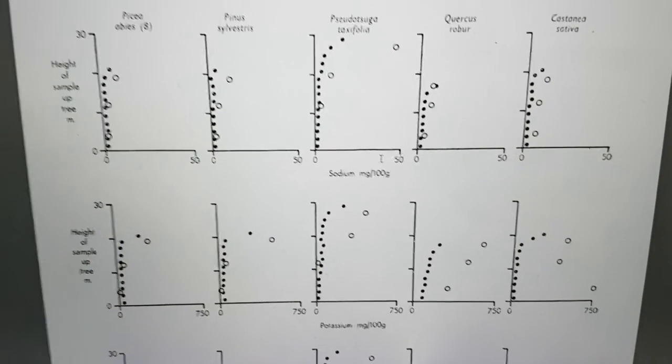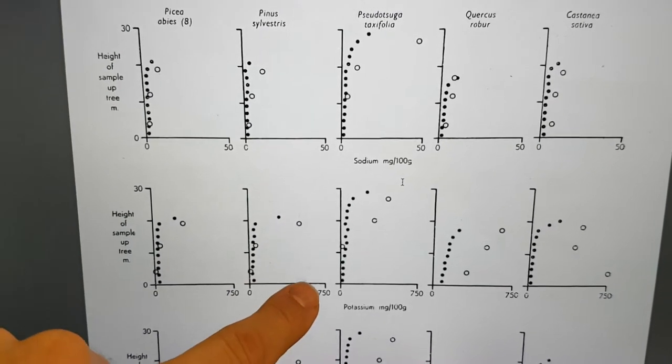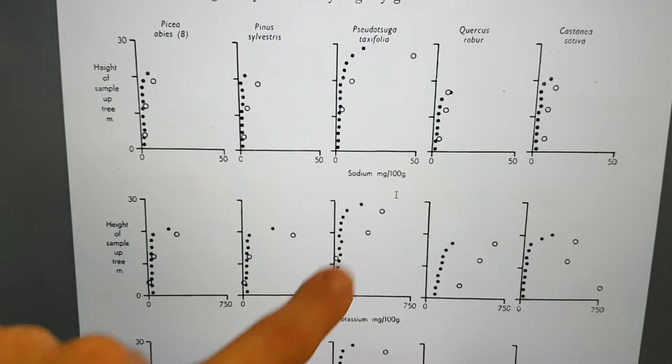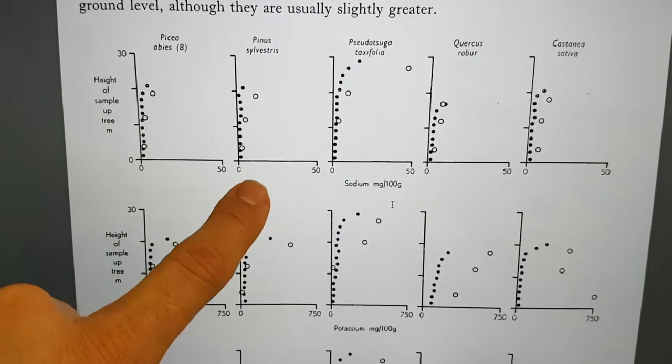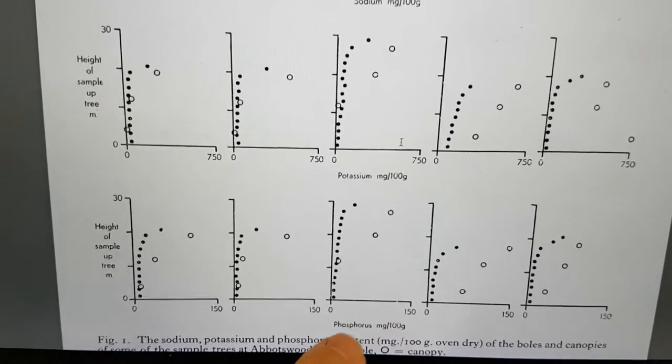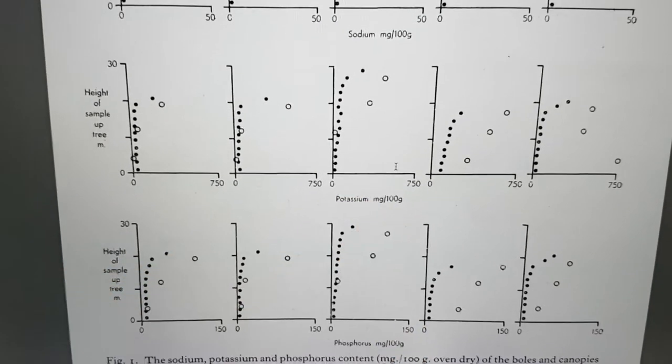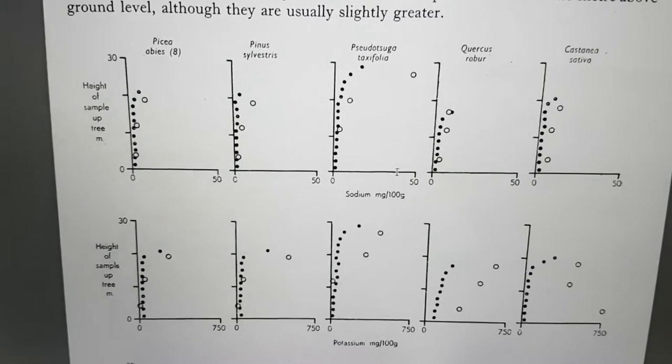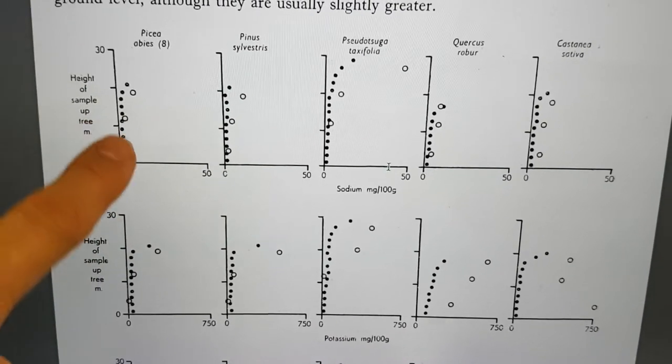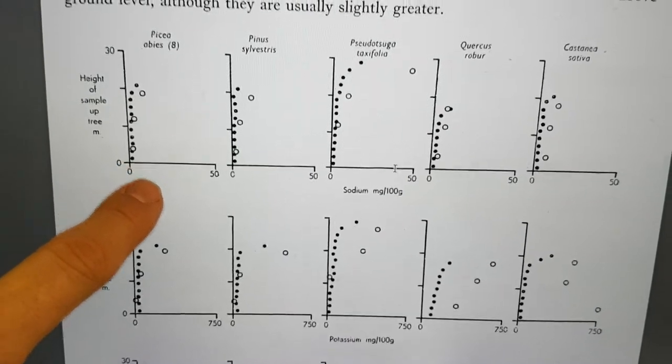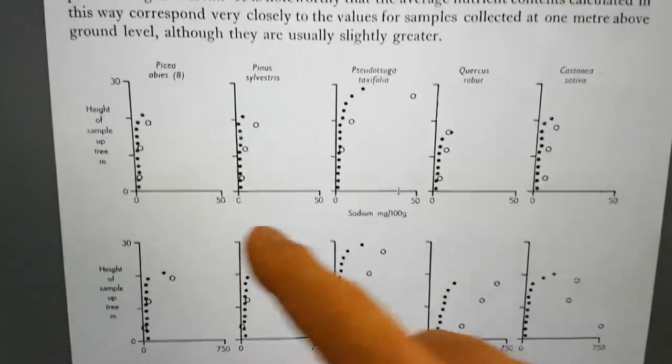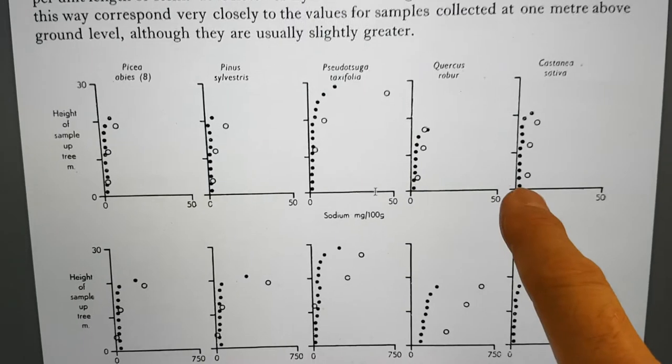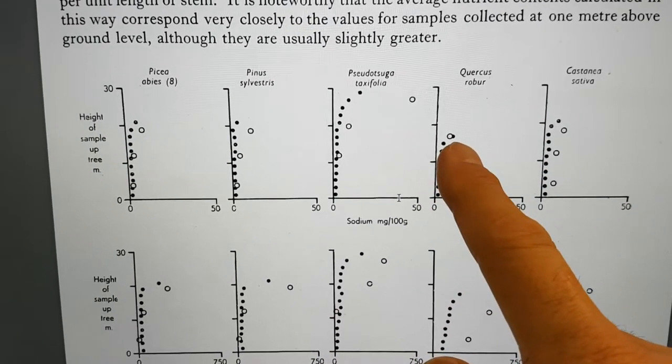The black dots here are in the bowl—the tree trunk and branches. The open dots are for the canopy, which is the leaves. If you look at the dry weight for all these different species, potassium is much higher concentration in milligrams per 100 gram than either sodium or phosphorus. It goes from 0 to 750 for potassium. He notes in the paper that for most trees, there isn't really much variation as you go up the tree, but it does tend to get a little bit more concentrated as it goes up.